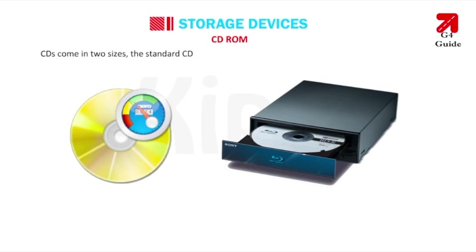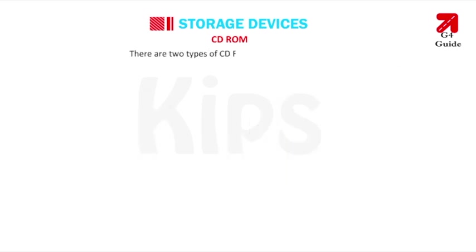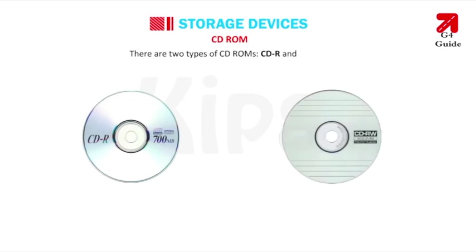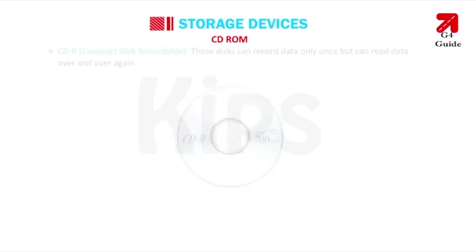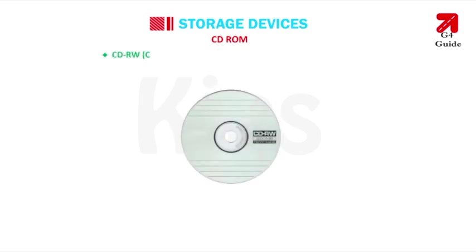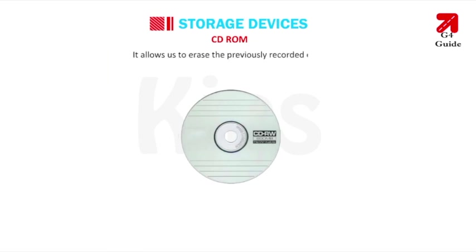The speed of a CD-ROM drive is called the data transfer rate, measured in kilobytes per second. CDs come in two sizes: the standard CD with 120 mm diameter and the mini CD with 80 mm diameter. There are two types of CD-ROM: CD-R (Compact Disc Recordable), which can record data only once but can be read many times, and CD-RW (Compact Disc Rewritable), which allows erasing previously recorded data and writing new data multiple times.